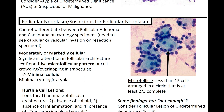Moving on, you can have a follicular neoplasm, or suspicious for follicular neoplasm. Remember that on cytology we cannot differentiate between a follicular adenoma and a carcinoma — you're going to need to see the capsule and vascular invasion to make that diagnosis. Carcinoma if there is invasion, adenoma if there is not. Follicular neoplasm is often moderately or markedly cellular with significant alteration in follicular architecture, repetitive microfollicular patterns, cell crowding with overlapping trabeculae, minimal colloid, and minimal cytologic atypia.